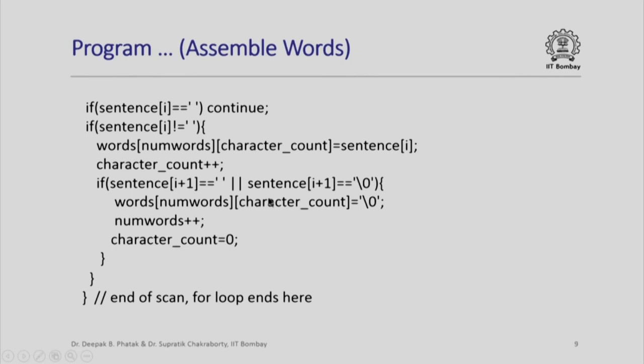This word has terminated, so the next word has to start. I increment the number of words, numbers and I reset character count to 0 because in the second word which is the next row of the word matrix, the character count will start from 0, 1, 2, 3, 4 for a new word. That is all I need to do. When I finish this, I will come out here, this is the end of this and when I come here, I have finished the entire scan. Notice how beautifully in a single scan of the sentence, I have been able to collect all the words that were there inside the sentence separated by blanks.